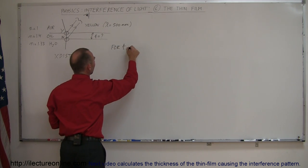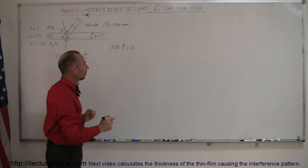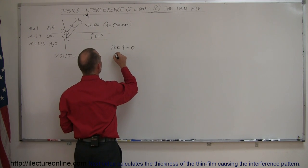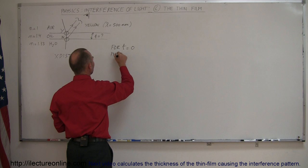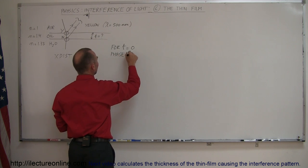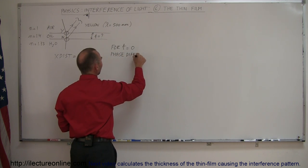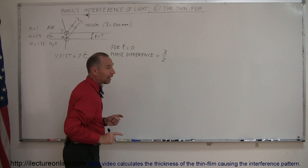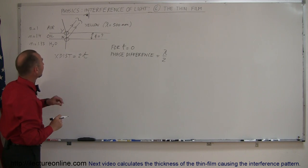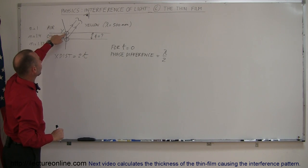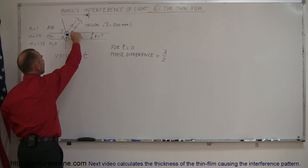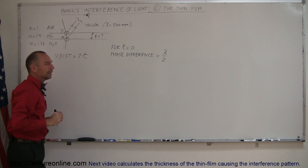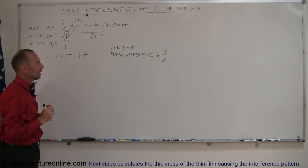So let's write that down. For t equals zero, for zero thickness, then the phase difference is already a half a wavelength. And the reason again, why is it different by half a wavelength? Because there is a phase shift on the first boundary and no phase shift on the next boundary. So even if t was infinitely small, they will already be 180 degrees out of phase or half a wavelength out of phase.